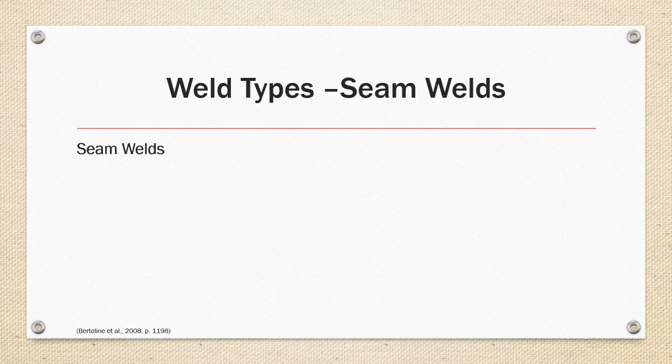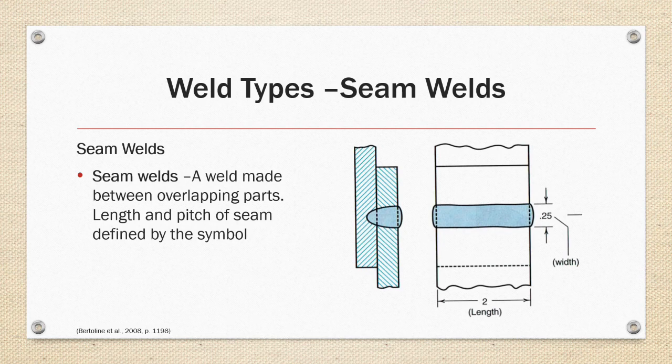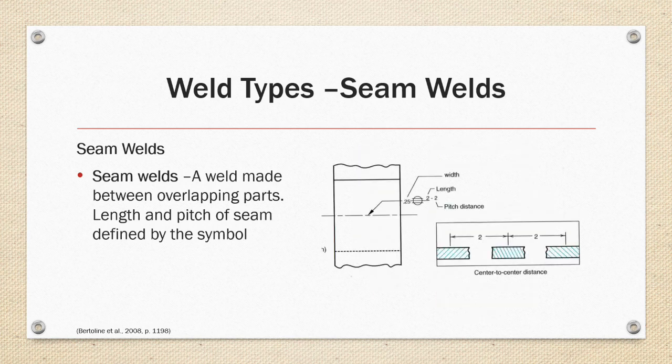Seam welds are made between overlapping parts, and the length and pitch of the seam are defined by the symbol. Seam welds are denoted by a circle with lines through it. The first figure in the symbol defines the length, and the second defines the pitch distance.